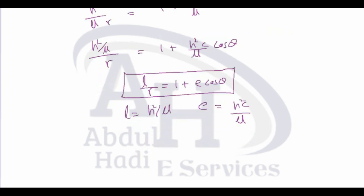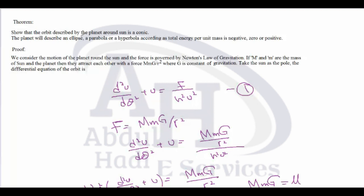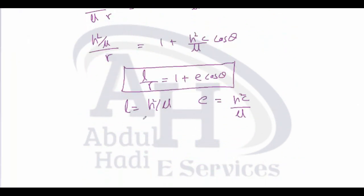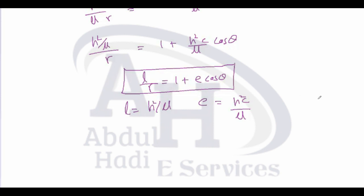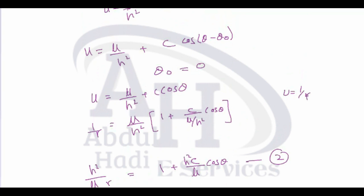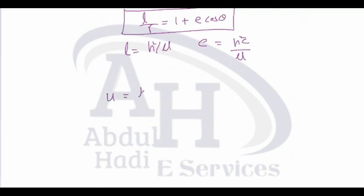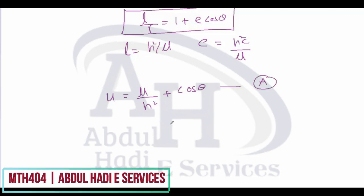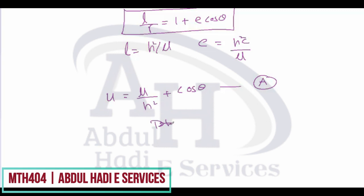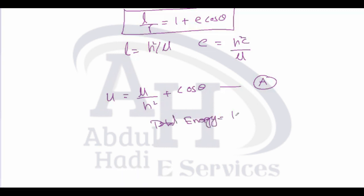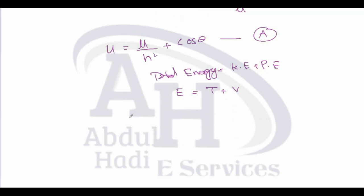This proves the orbit described by the planet around the sun is a conic. Now we express this in terms of energy. We have u = μ/h² + C·cos(θ) as equation A. The total energy E equals kinetic energy plus potential energy: E = T + V.